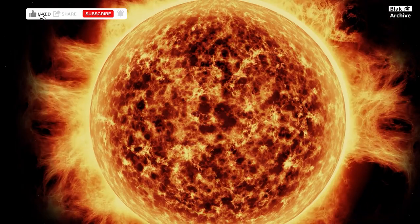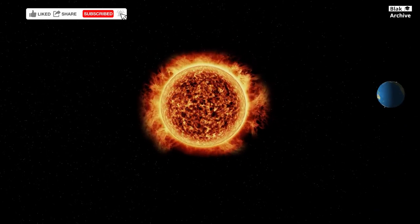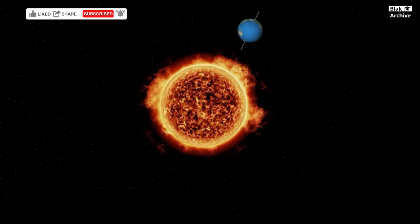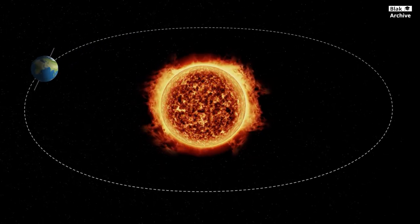Leap years serve as a fascinating element within our Gregorian calendar system, a timekeeping mechanism that has been used by much of the world for centuries. This quadrennial adjustment of adding an extra day to the calendar year, February 29th, plays a crucial role in keeping our calendars in alignment with Earth's orbit around the Sun and the subsequent changing of the seasons. Understanding the necessity and mechanics of leap years involves delving into astronomy, history, and the evolution of calendar systems.